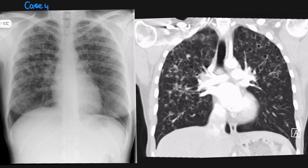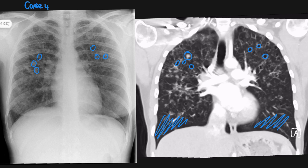The last patient is a 38-year-old lady who presents with a few weeks' history of cough and shortness of breath. Her chest x-ray is abnormal, with multiple nodular opacities seen in both lungs. On the CT, there are bilateral thin-walled cysts particularly in the upper lobes, and also some nodules. Importantly, there is again costophrenic angle sparing, and this is another case of LCH — I would expect this patient to be a heavy smoker.